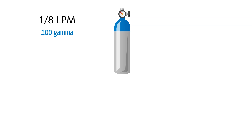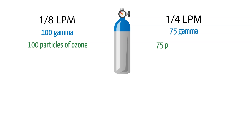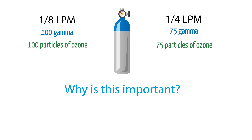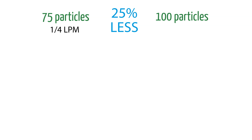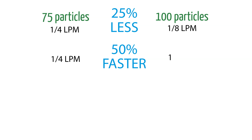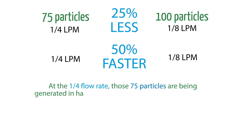Let's say that at 1/8 liter per minute our ozone generator produces 100 gamma, and at 1/4 liter per minute our ozone generator produces 75 gamma. Thinking of gamma as particles, at 100 gamma we are producing 100 particles of ozone, and at 75 gamma we are producing 75 particles of ozone. It's all about the flow rate and particle production. The 75 particles produced at 1/4 liter per minute is 25 percent less than the 100 particles created at 1/8, but 1/4 is a 50 percent faster flow than 1/8. This means that at the 1/4 flow rate, those 75 particles are being generated in half the time as the 100 produced at 1/8.